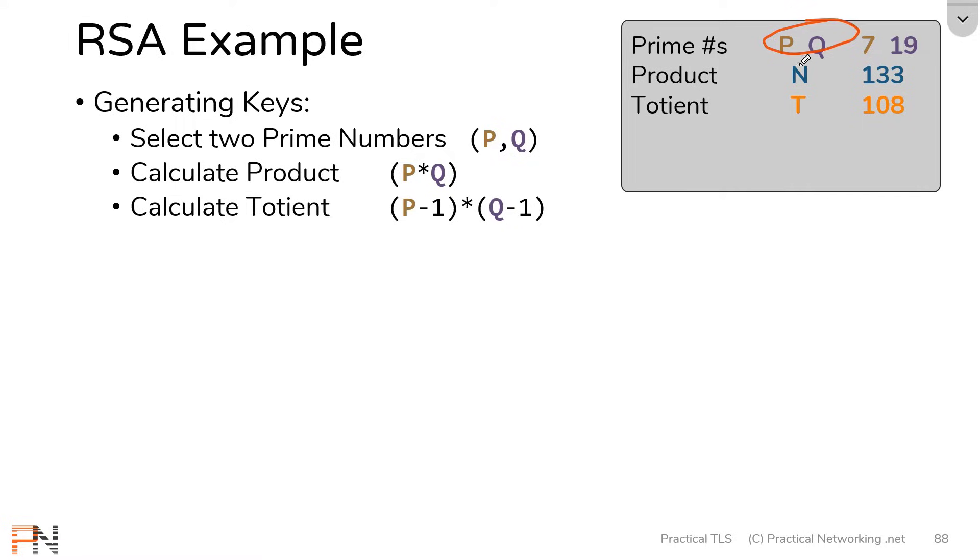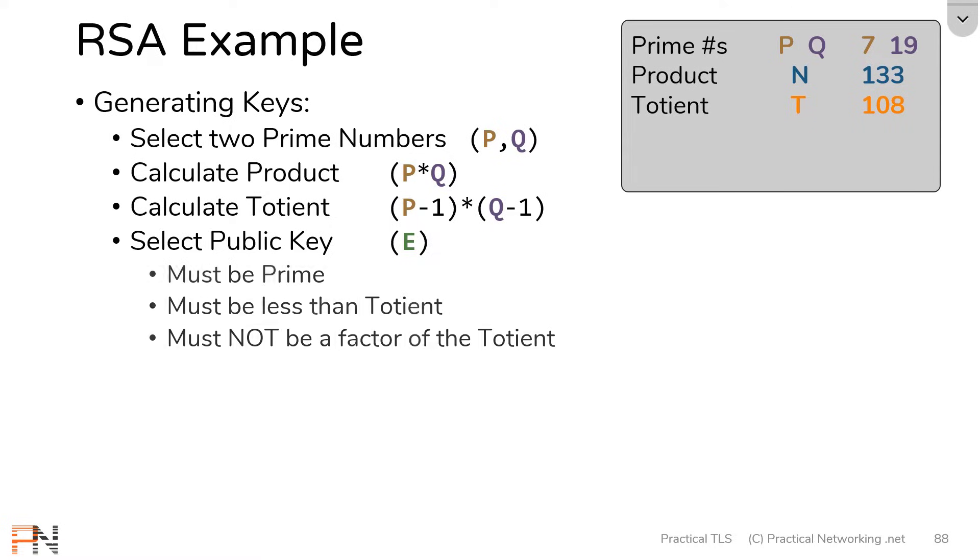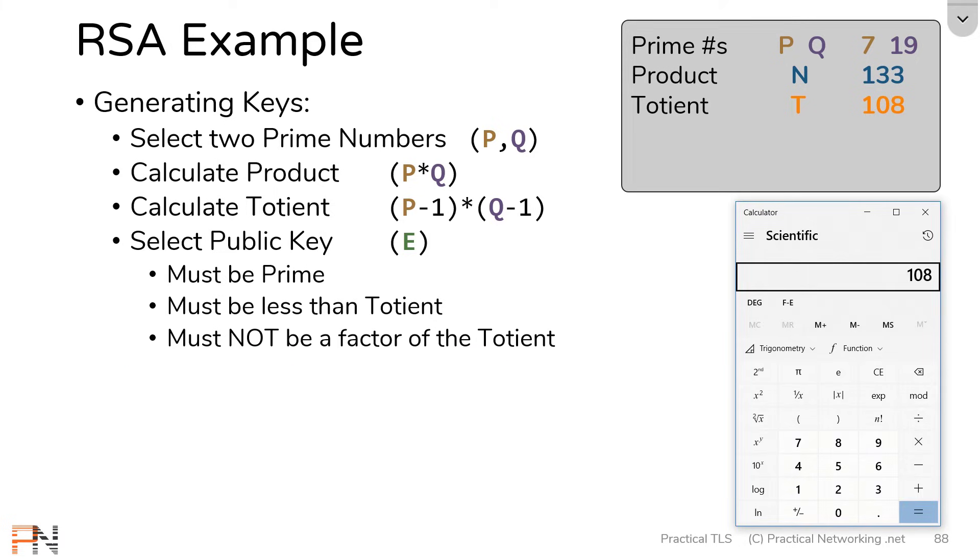Now that I have my prime numbers, my N number, the product, and my totient, I can now calculate a public key. The public key must match three conditions. The first, the public key has to be a prime number. The second is that it has to be less than the totient, that's 108. And finally, it cannot be a factor of the totient. So let's run through the example using the number 3. Well, 3 is a prime number, so it satisfies the first requirement. 3 is less than 108, so it satisfies the second requirement. But let's see if 3 is a factor of the totient. Well, one way of calculating factors is by taking the number and finding the modulus when divided by 3. If you get a 0, this tells you 3 is indeed a factor of the totient, which means we cannot use 3 as a public key value.